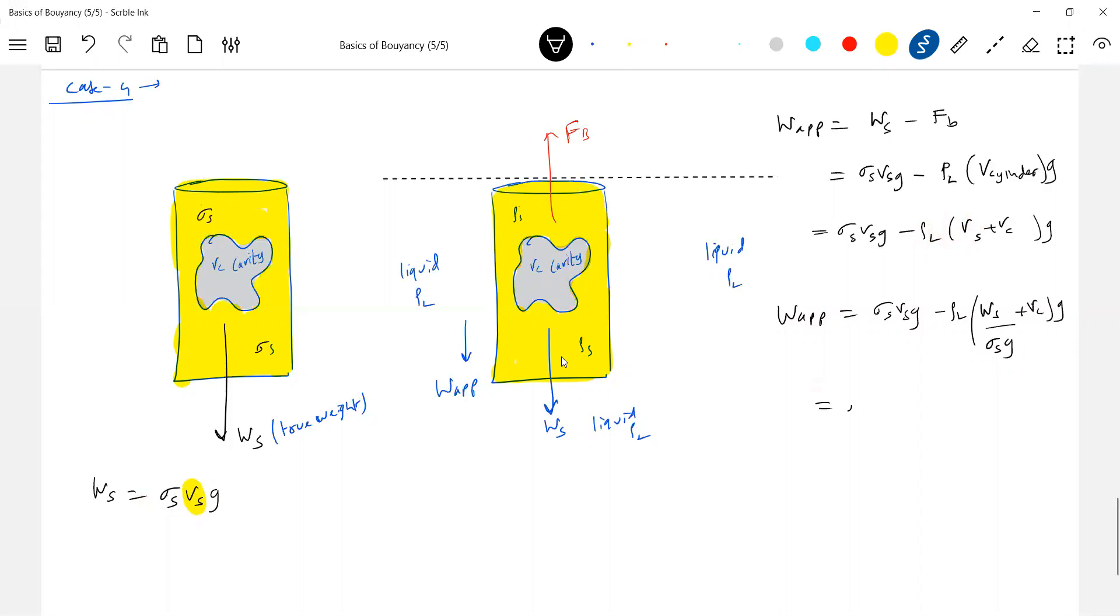Let's simplify further. Rho s, rho l, Ws, rho s Vs g, what we can write it as is actual weight only, Ws. So that this should be equal to, okay now the total formula will be rho l Ws sigma s minus rho l Vc g.